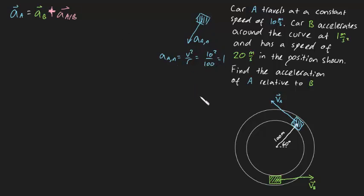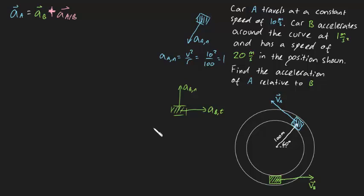Now let's talk about car B — it's a little bit more complicated. We also have a normal acceleration, A_B_N, the acceleration of car B in the normal direction. But we also have another acceleration tangentially, which is given as 1 meter per second squared — that's A_B_T. We can say A_B_N equals V squared over R, which is 20 squared divided by 100, which is 400 divided by 100, which equals 4. And A_B_T is equal to 1 — that's simply provided.